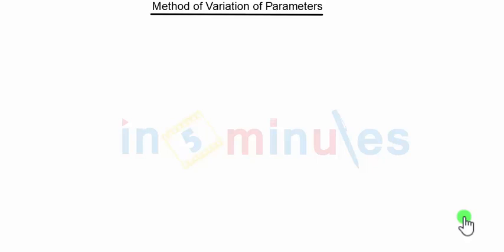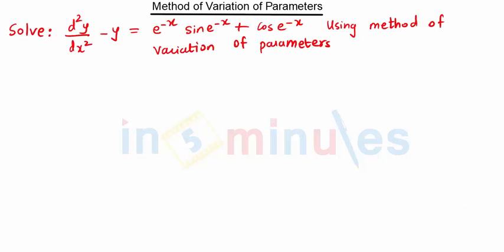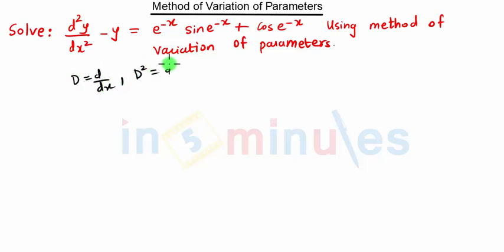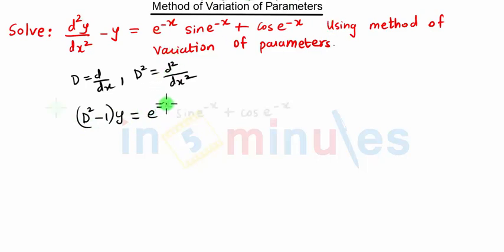Hello everyone, welcome to 'In 5 Minutes.' In this video we are going to see the next problem on method of variation of parameters. We have to solve this equation using method of variation of parameters. Here we have d²/dx², so we substitute D = d/dx, then D² = d²/dx². Instead of this we substitute D² - 1 and take y common, giving (D² - 1)y. This equation is of the form f(D)·y = X.